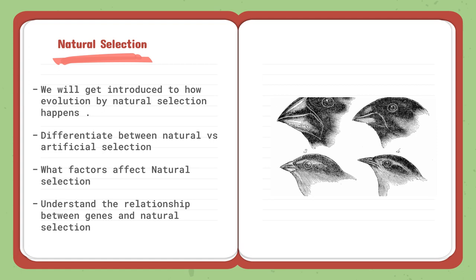The second lesson is natural selection. We will get introduced to how evolution by natural selection happens. So what is natural selection? How did it contribute to the evolution? And then we're going to differentiate between artificial and natural selection. And what factors affect natural selection, such as environmental change. And understand the relationship between genes and natural selection. So mutations happened. Environmental change happened. So it caused organisms to adapt to new environments. So that started by natural selection and it contributed to the theory of evolution.